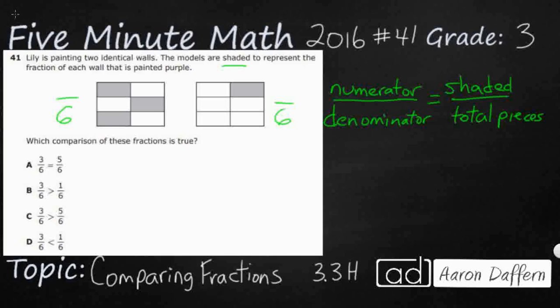And so if we're looking at the numerator for each, we would see that we've got 1, 2, 3 pieces over here on this left wall, and we just have 1 piece or 1 brick over here on the right wall. And so now we need to figure out which of these comparisons is true.